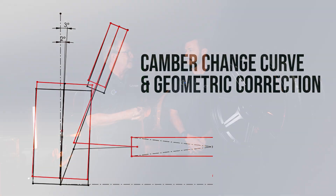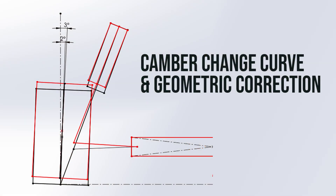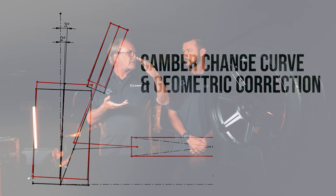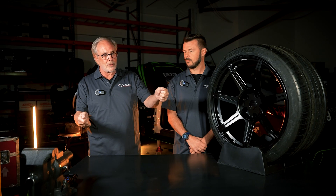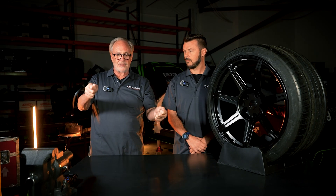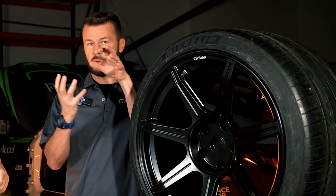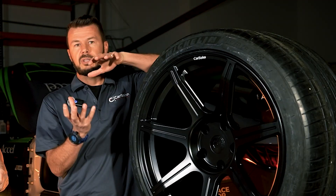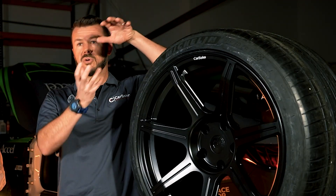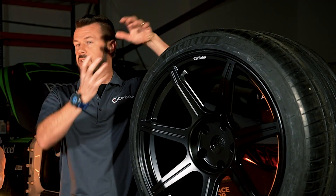There's also what's called a camber change curve, or geometric correction for roll. The upper wishbone is shorter than the lower wishbone and is also at a different angle, so that when the car rolls in a corner, it actually gains negative camber to help compensate for the roll. Or if you hit a bump and there's vertical movement, the wheel moves inward and gains camber as it goes up.